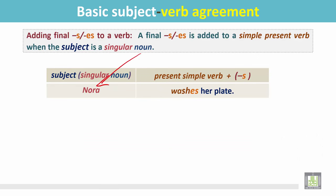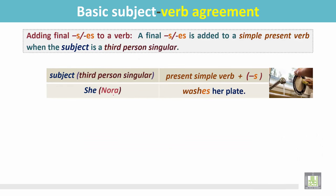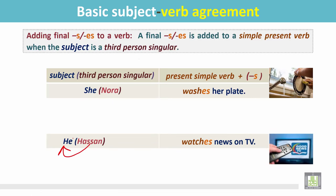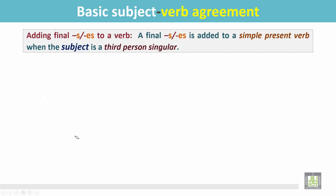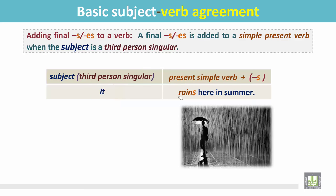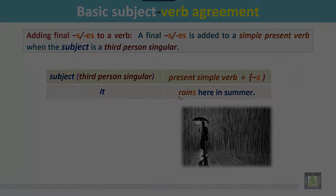The singular noun Nora is changed to 'she' — she washes her plate. Hassan watches news on TV becomes he watches news on TV. We can also use 'it' as the third person singular pronoun. For example: it rains here in summer.